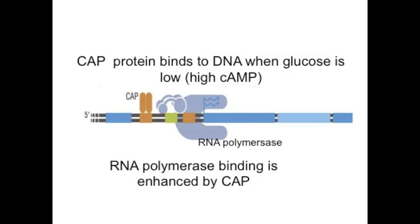Another important feature of the operon is the CAP protein that binds to the CAP operator. This protein binds when there is a low level of glucose and thus a high level of cyclic AMP. When it binds, it helps recruit RNA polymerase and therefore increases gene expression.